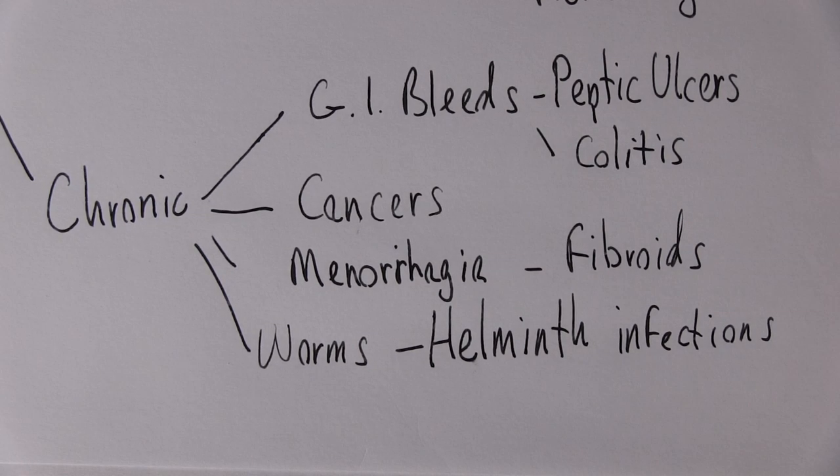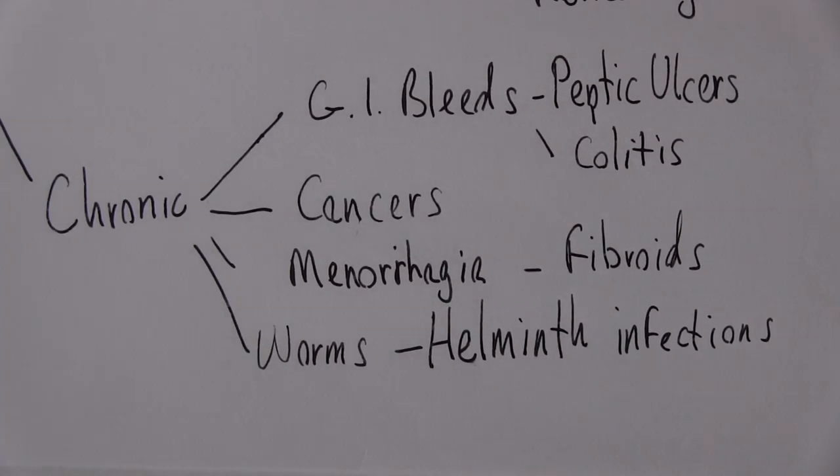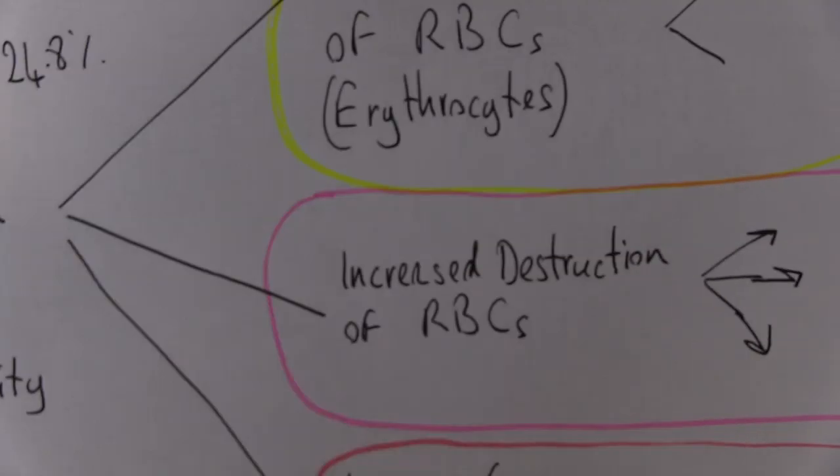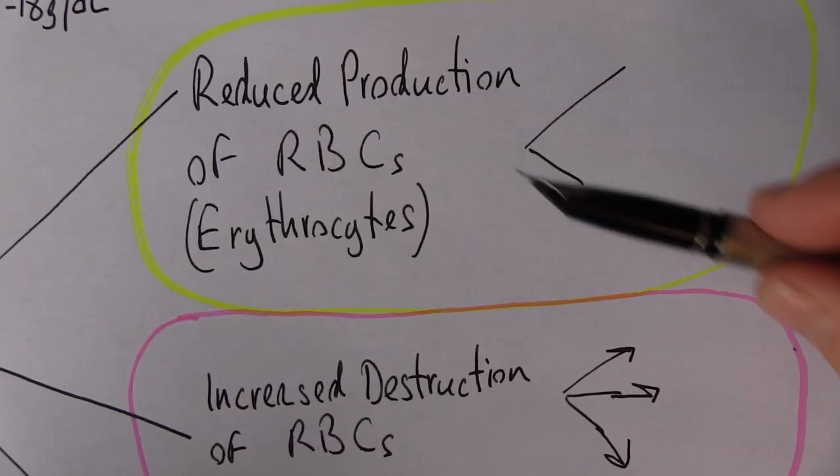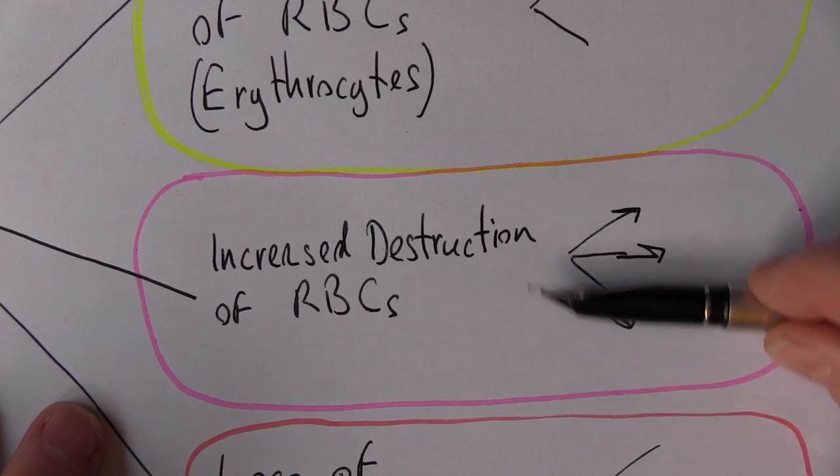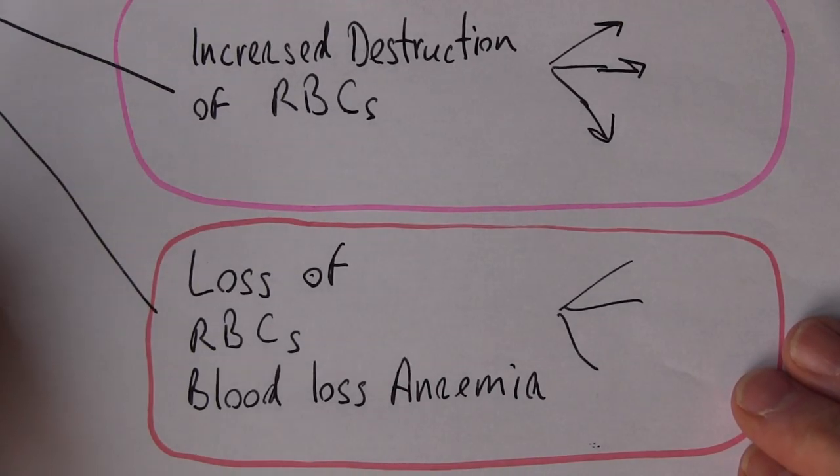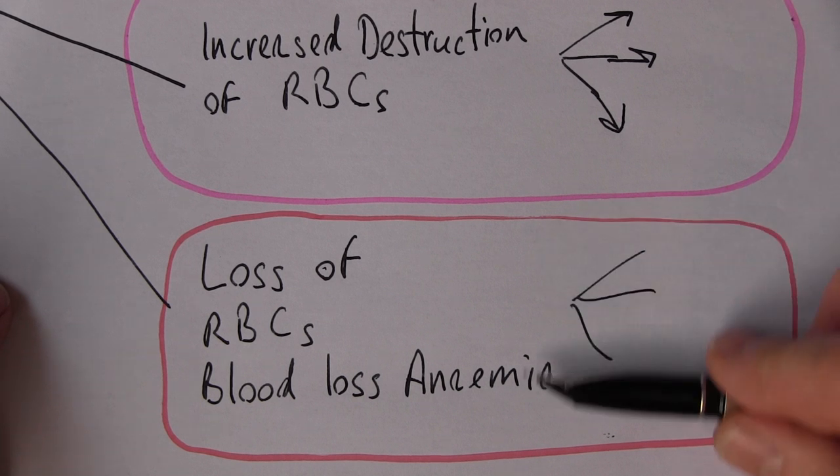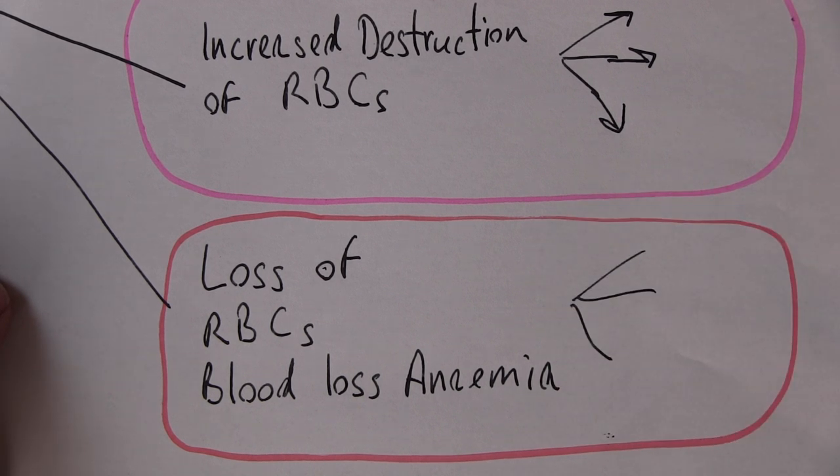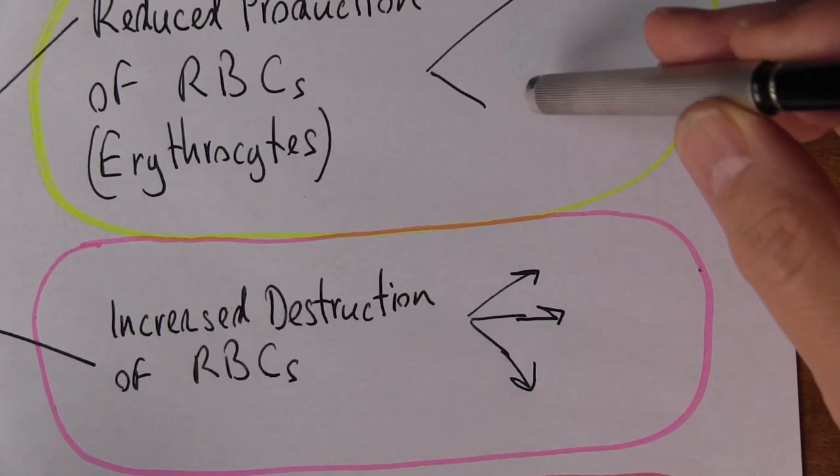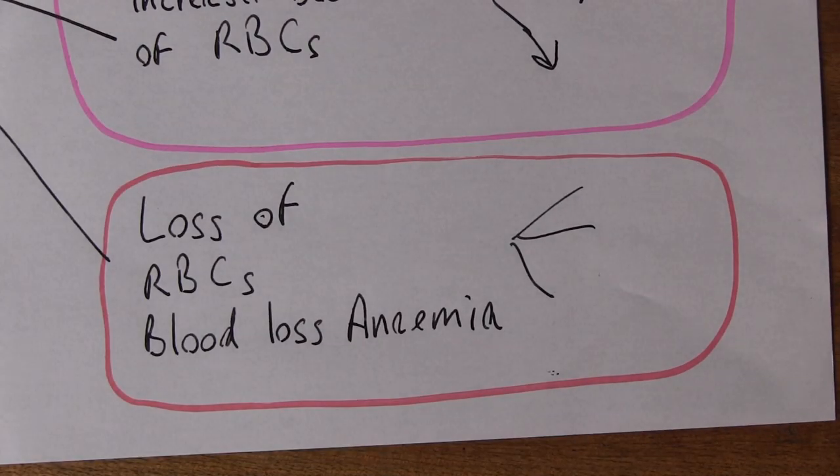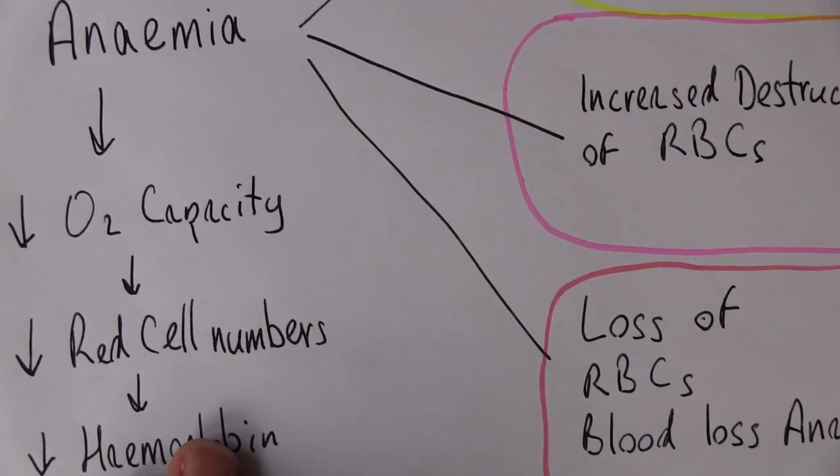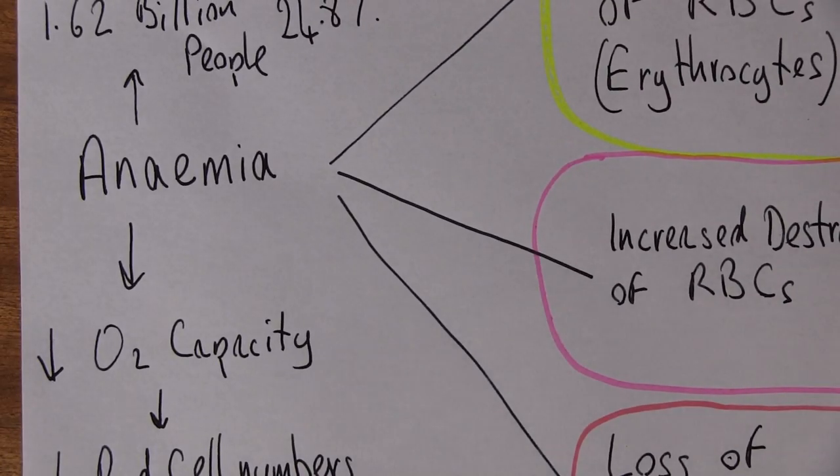So there we see these categories: anemia caused by reduced production of red cells, increased destruction of red cells, and loss of blood, blood loss anemia, hemorrhagic loss of blood cells. So quite easy to remember. In anemia there's not enough cells produced, there's too many cells destroyed, or the red blood cells are lost.